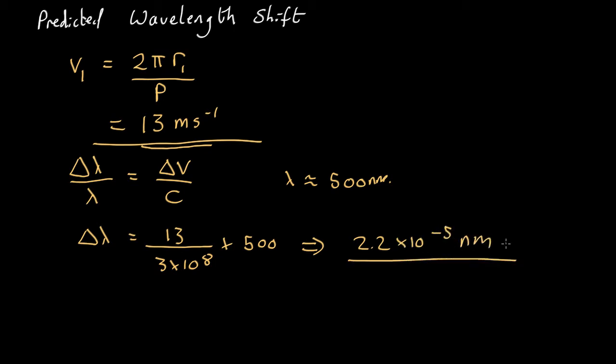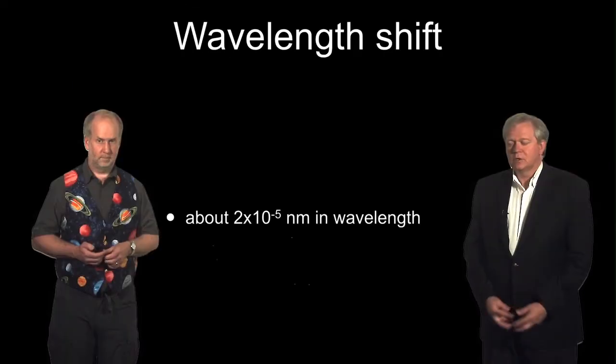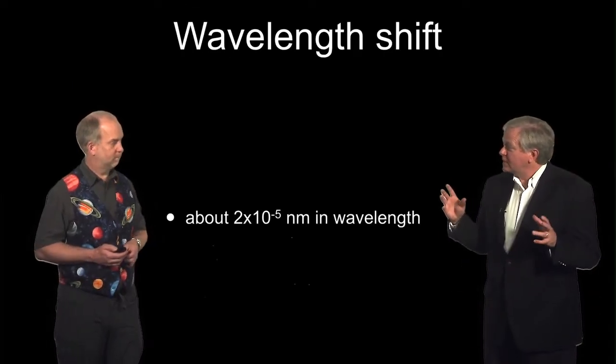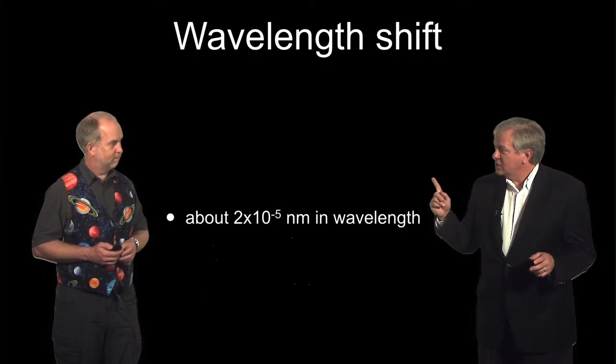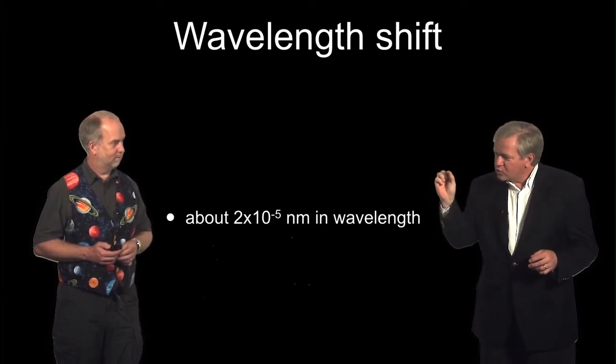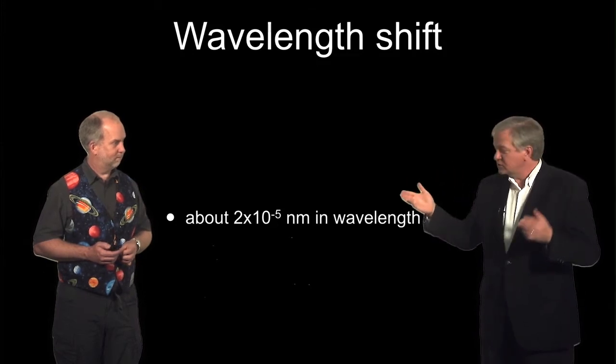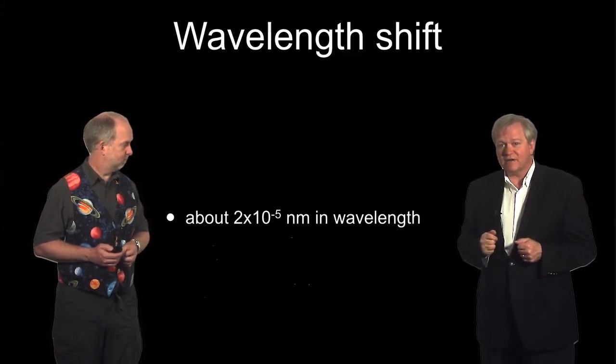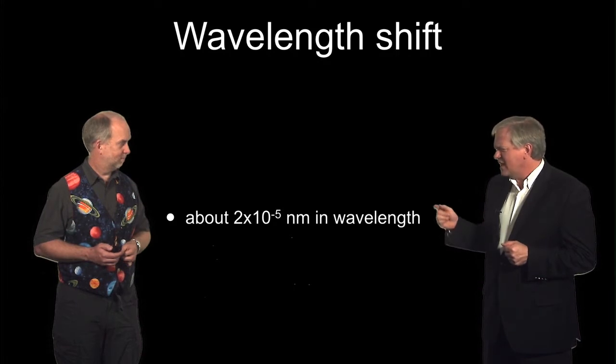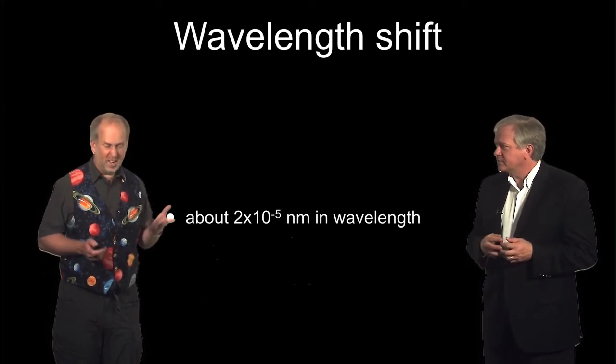So Paul, you've shown us that as Jupiter orbits the Sun, it's going to cause the Sun to have a small Doppler shift, equivalent to 2×10⁻⁵ nanometers in wavelength. Now that's not a very big shift. Yeah, it's very tiny.